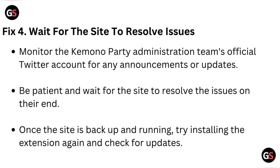Fix four: wait for the site to resolve issues. Monitor the Kimono Party administration team's official Twitter account for any announcements or updates. Be patient and wait for the site to resolve the issues on their end. Once the site is back up and running, try installing the extension again and check for updates.